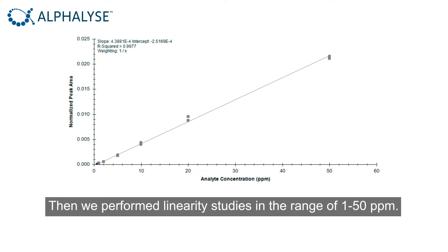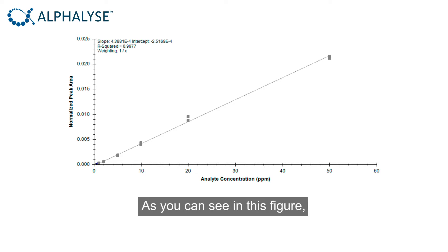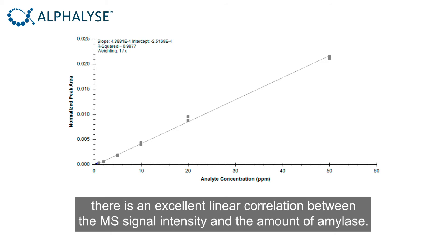Then, we performed linearity studies in the range of 1 to 50 ppm. And, as you can see in this figure, there is an excellent linear correlation between the MS signal intensity and the amount of the amylase.